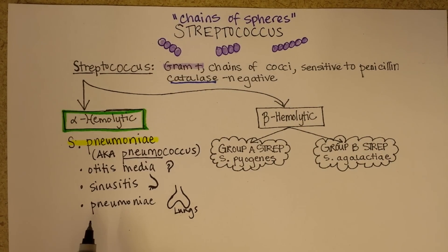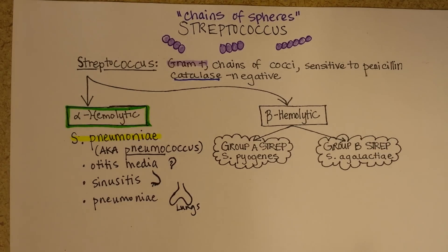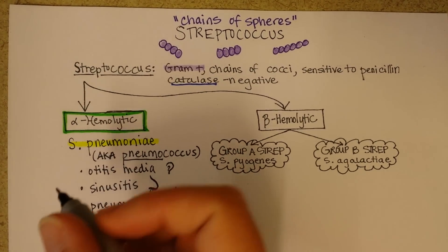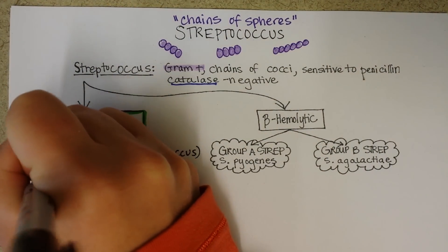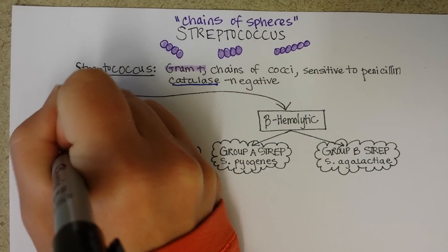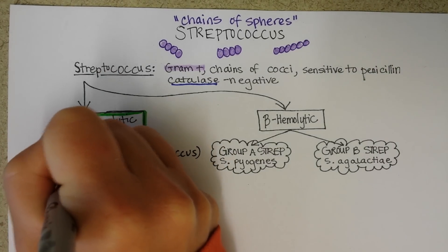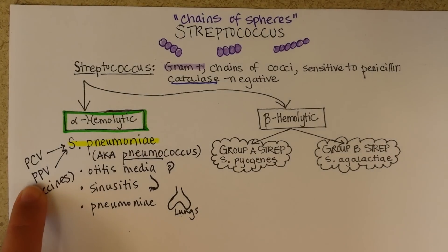Streptococcus pneumoniae has been a target for vaccines, with the idea of saving the lives of young children and elderly people who get pneumonia. That said, the vaccines leave something to be desired — they have a number of problems. There are two vaccines: PPV (pneumococcal polysaccharide vaccine) and PCV (pneumococcal conjugated vaccine).